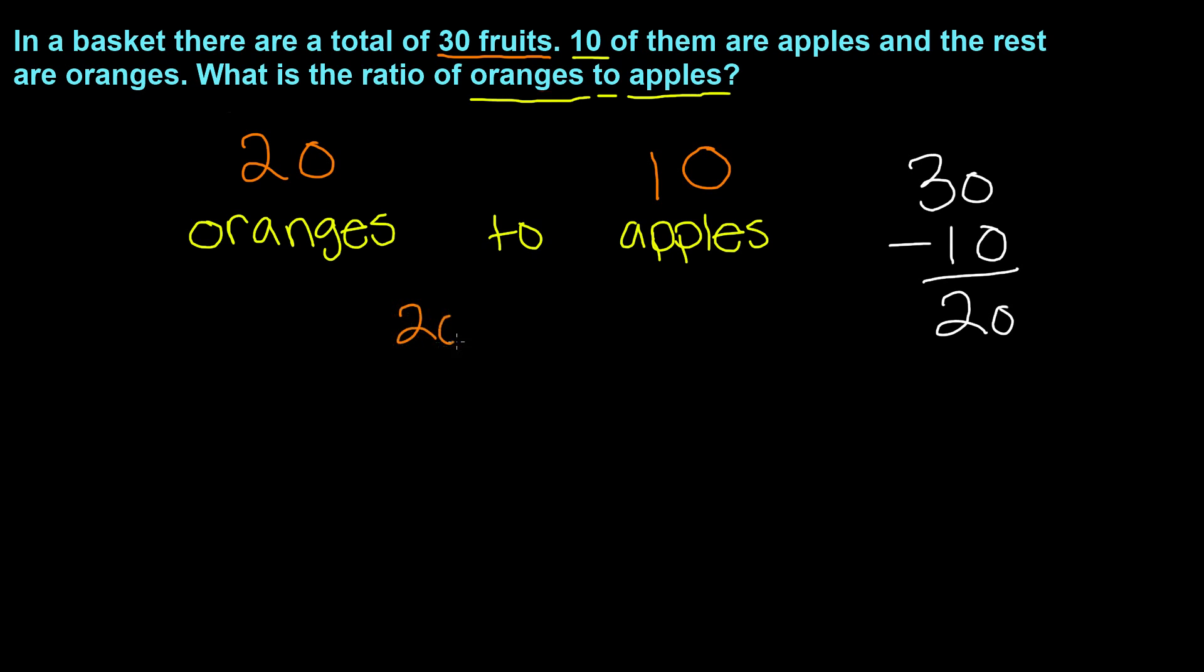20 to 10. Now we must simplify this ratio. Remember, to do that, we have to first put this in fraction form. So 20 to 10 in fraction form would be 20 over 10.